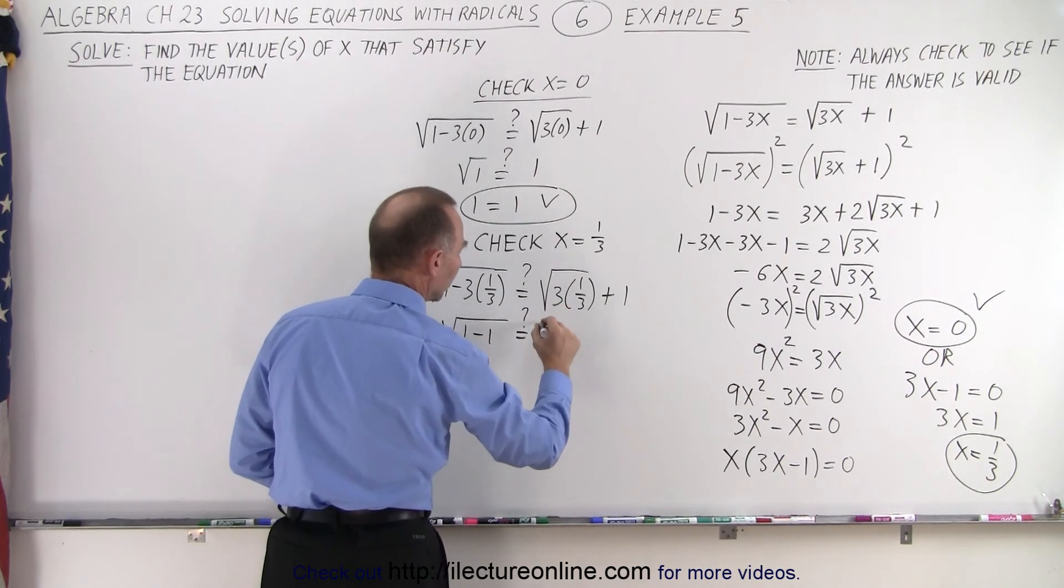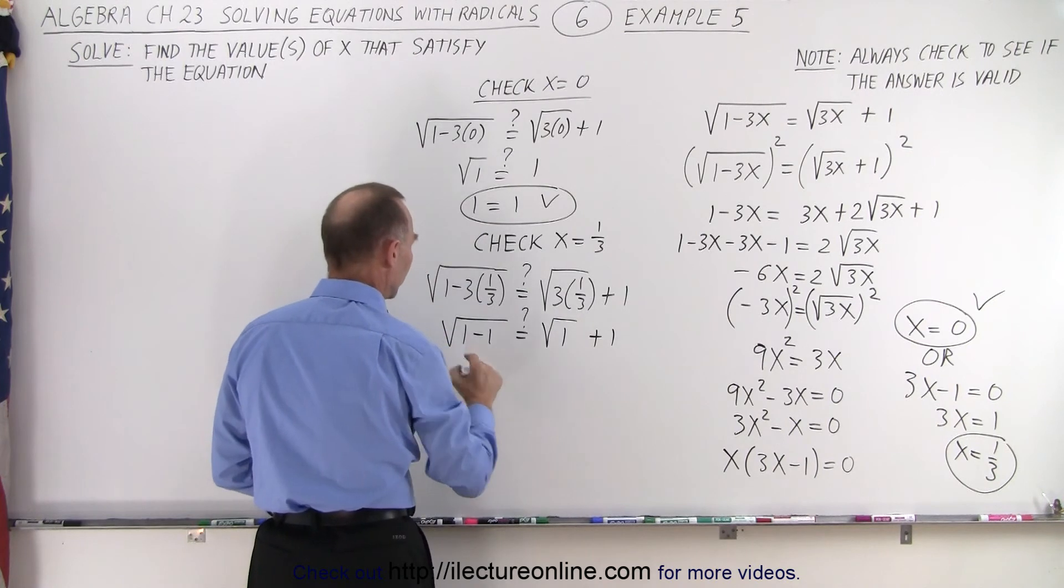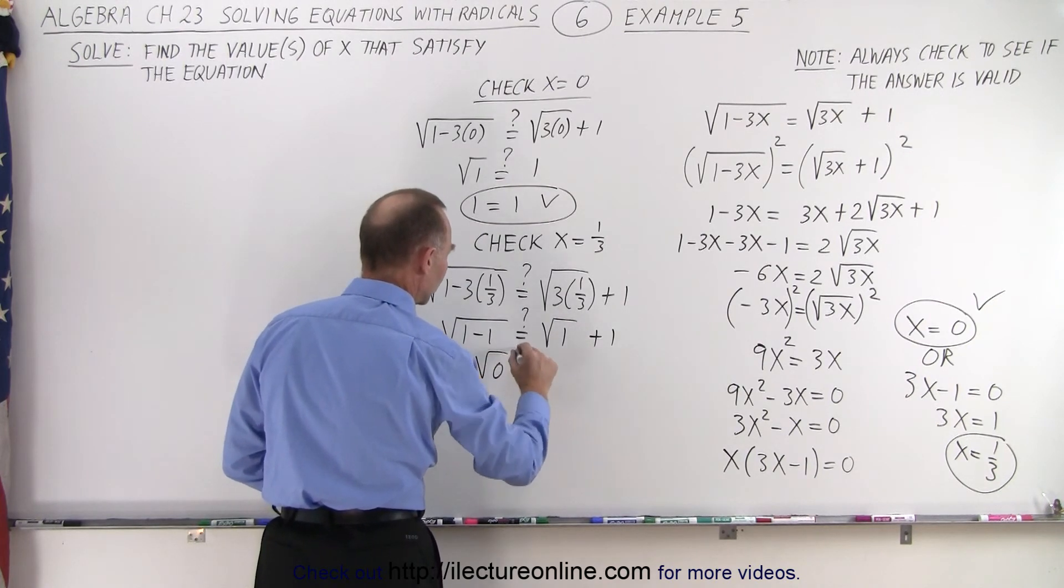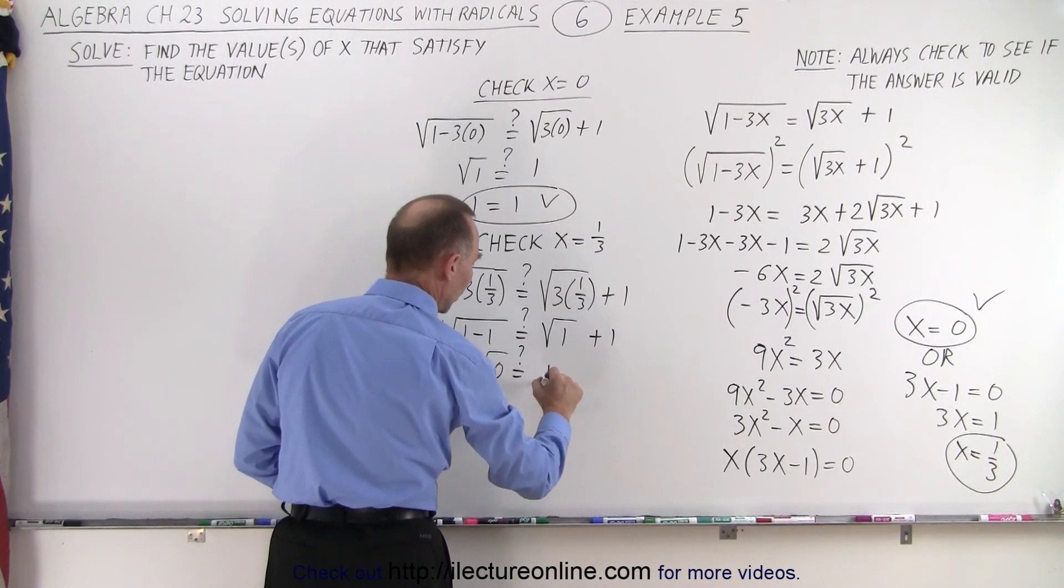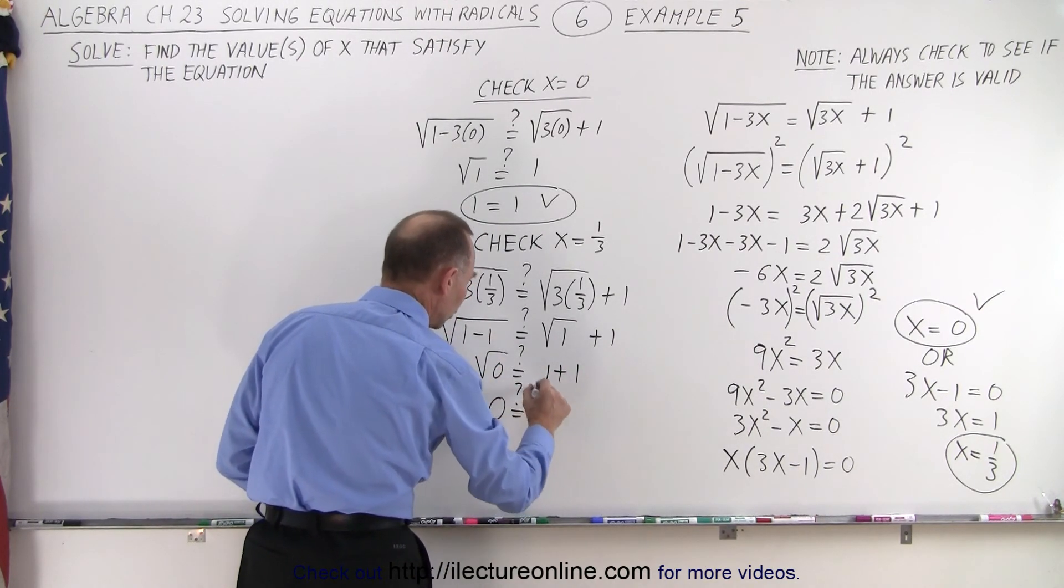Is that equal to question mark, the square root of, that would be 1 plus 1, so this would be the square root of 0. Is that equal to question mark, that would be 1 plus 1. And if we solve that for that, we get 0 equals question mark 2.